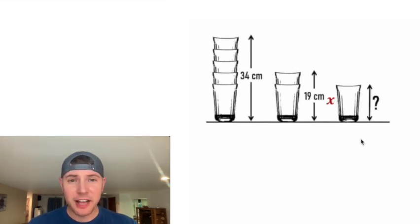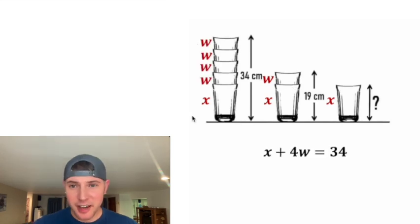First, let's call the height of a glass X. And the heights of both of these glasses will also be X. And let's call this distance right here W. And on this stack, we have four Ws. The height of this stack is X plus 4W, and it's also 34 centimeters.